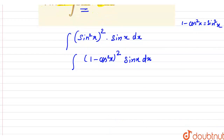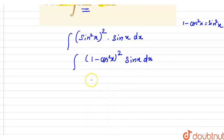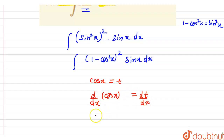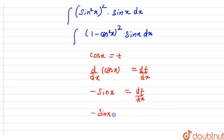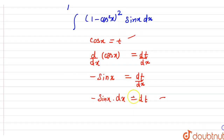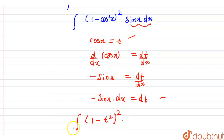Now we are going to use the method of substitution. We will let cos x equal to t. Now we will differentiate both sides. After differentiation we get d/dx of cos x equal to dt/dx. As we know that the derivative of cos x with respect to x gives minus sin x, so minus sin x dx is equal to dt. Now we substitute this into our integral, and in place of sin x dx we write minus dt.